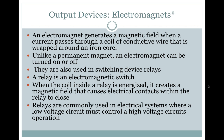Electromagnets. An electromagnet generates a magnetic field when a current passes through a coil of conductive wire that is wrapped around an iron core. Unlike a permanent magnet, an electromagnet can be turned on or off. They are also used in switching device relays. A relay is an electromagnetic switch. When the coil inside a relay is energized, it creates a magnetic field that causes electrical contacts within the relay to close. Relays are commonly used in electrical systems where a low voltage circuit must control a high voltage circuit's operation.